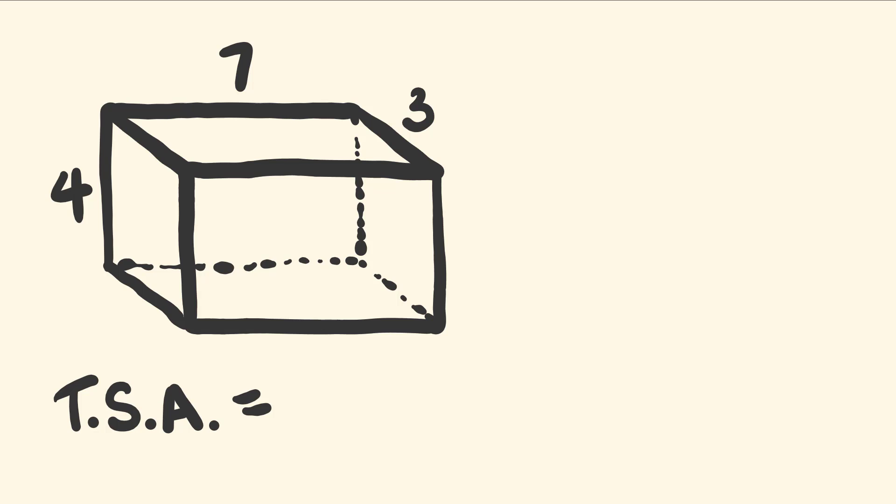So time's up. Did you get the answer that the total surface area of this rectangular prism is 122 units squared? If you did, congratulations. If not, don't worry because right now I'm going to show you a great little trick for working out the total surface area of any rectangular prism.